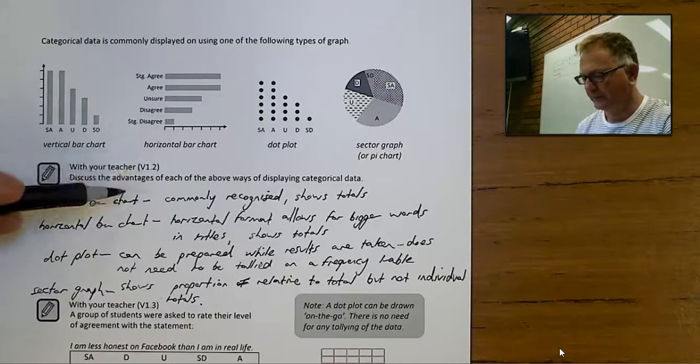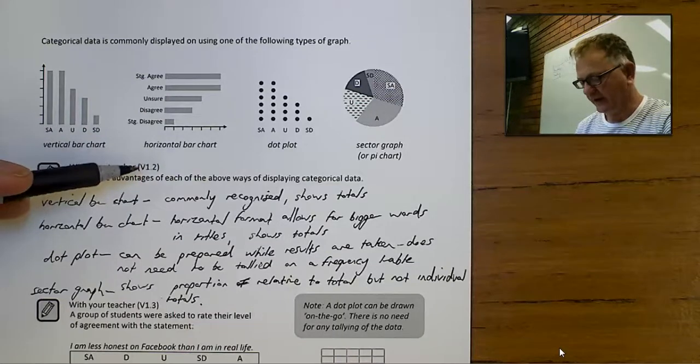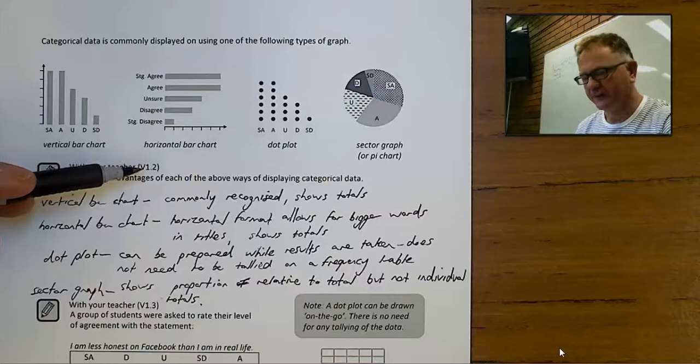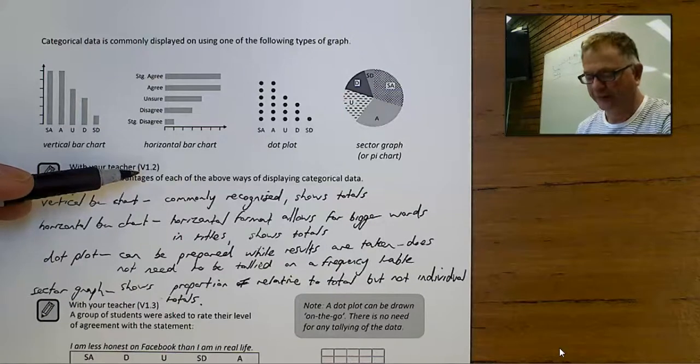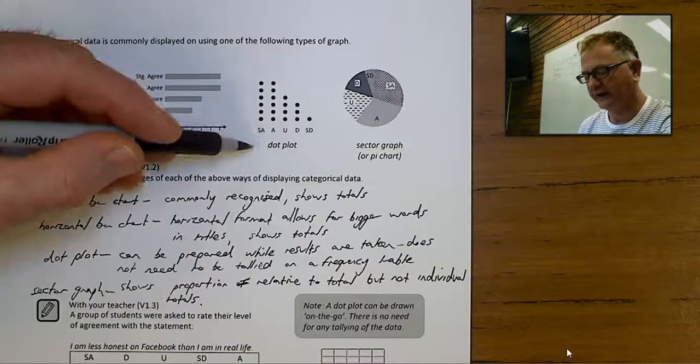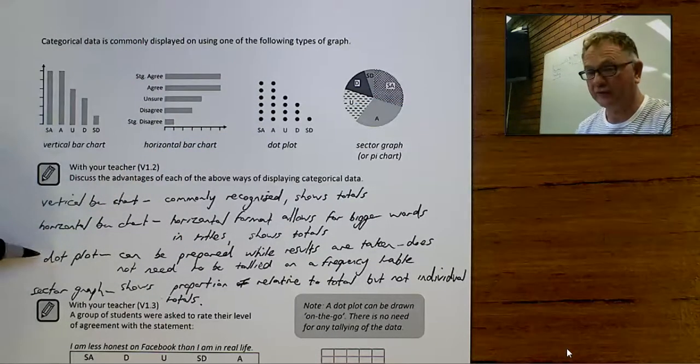So you're asking people—I think in this one we were asking them, giving them a statement, and people had to say did they strongly agree, agree, and so on. Maybe you were doing it over the phone. If you get one particular answer, you can put a little x and build your graph up while you're doing the survey.